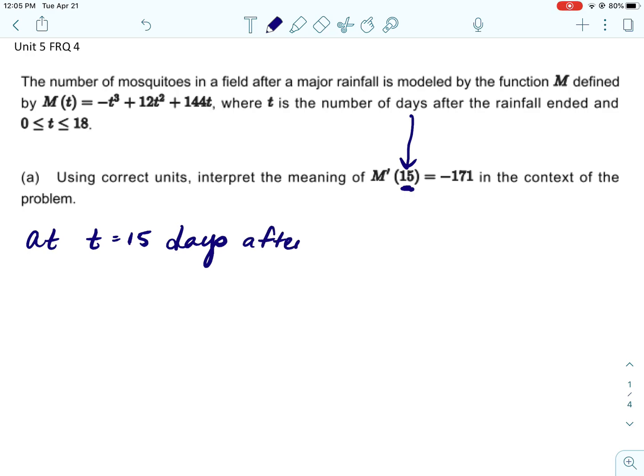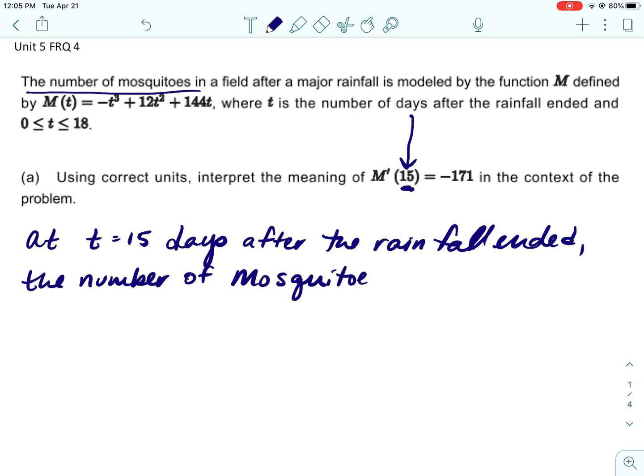So the 15 is the number of days. So we would say at t equals 15 days, and it might be smart if we say after the rainfall ended. I don't think that's necessary though, but it won't hurt anything. And just use the words in the problem.